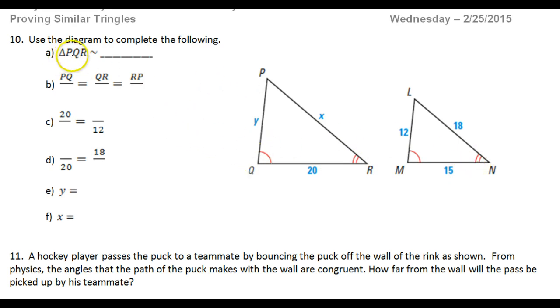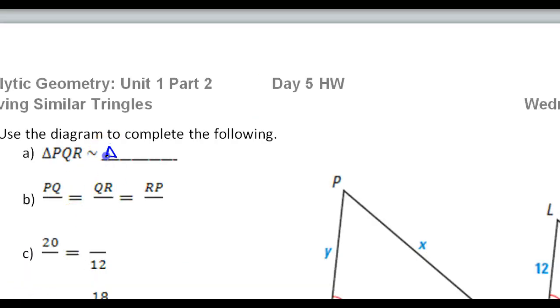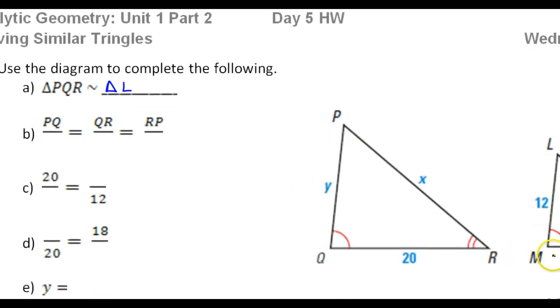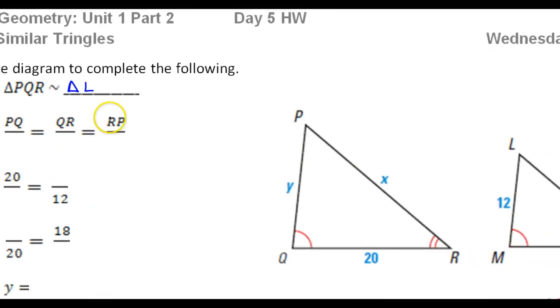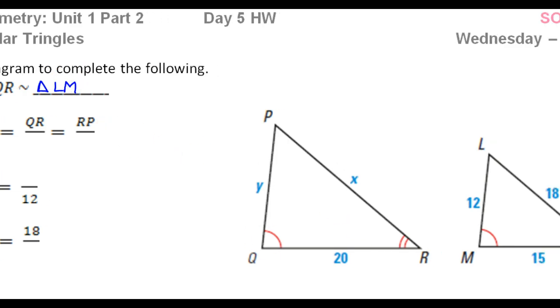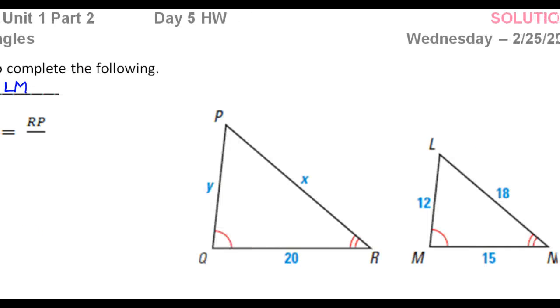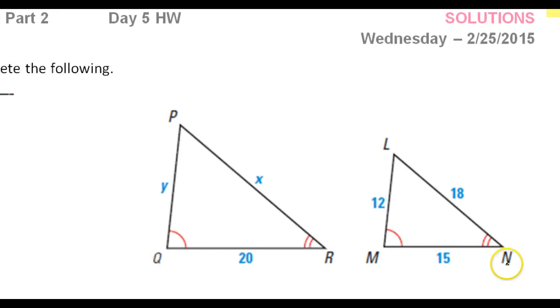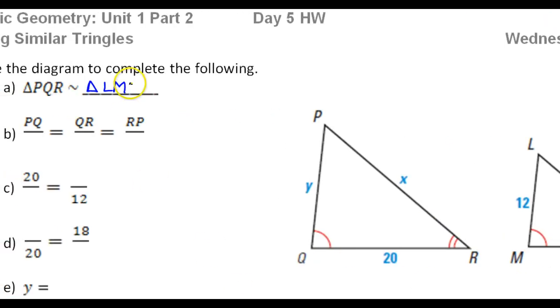If I have P, Q, R, then P is in the same position as L. So I can go ahead and say triangle, and then I can say L. And then Q is in the same position as M, so I can say M next. And so now I've done L and M, so that just leaves N. So the last letter must be N.